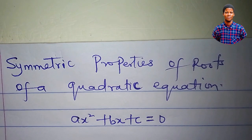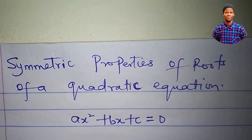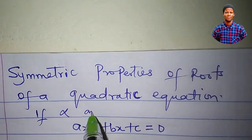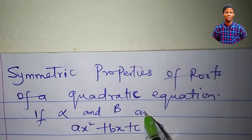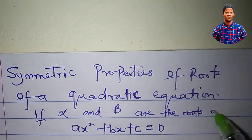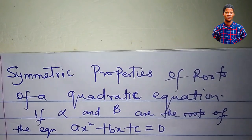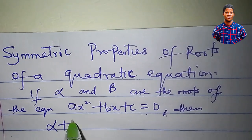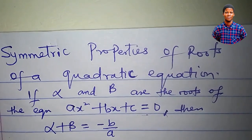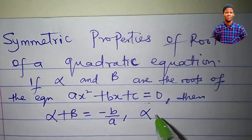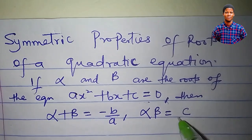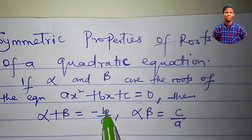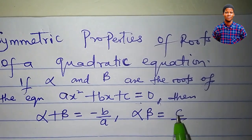When a quadratic equation is solved, two roots — that is, two values for x — will be obtained. So if alpha and beta are the roots of the equation, then alpha plus beta is equal to minus b all over a. Also, alpha times beta is equal to c all over a.